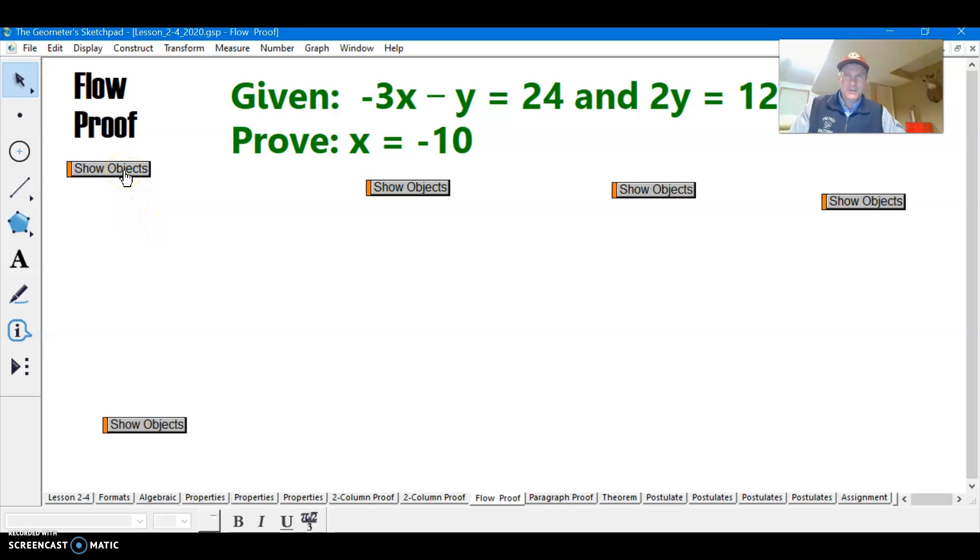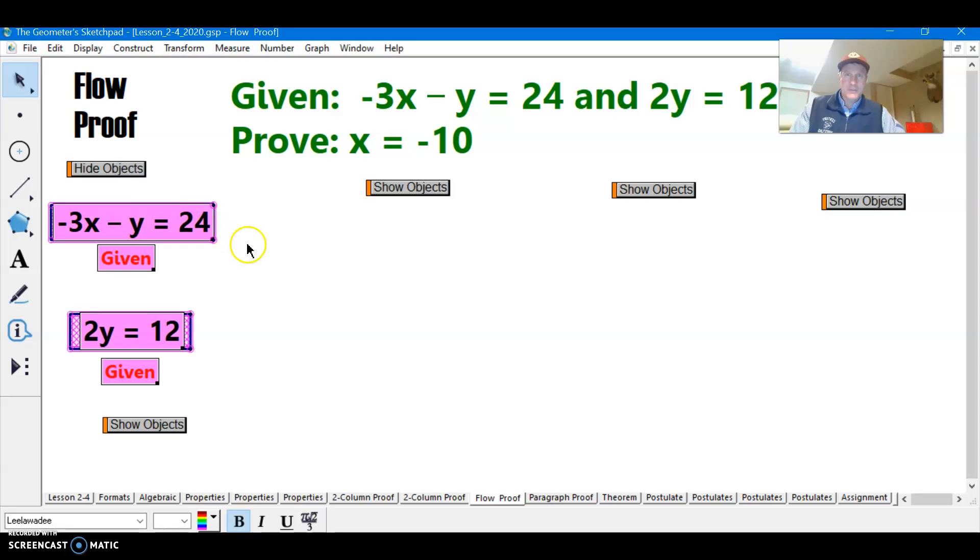So we're going to show the first two givens. We are given that this is true, and we are given that this is true. So these are like little note card kind of things. You know, cut out a note card, write a statement on it. Take another note card, put a statement on it. But underneath the statement, you put the reason, instead of putting it next to it in another column, just put it underneath.